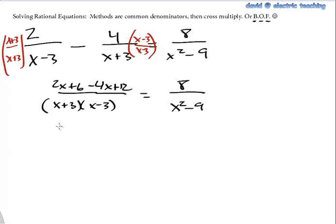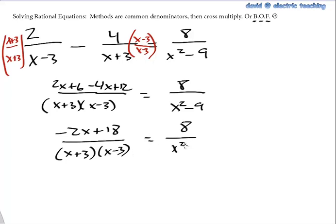So let's simplify this a little more. We've got a negative 2x on top. And what is that? 18. And down below we still have the x plus 3 and x minus 3. So we're just cleaning things up a little bit. Got x squared minus 9 now. Here's where we'll cross multiply and cross multiply to solve, where to get out of fraction mode.